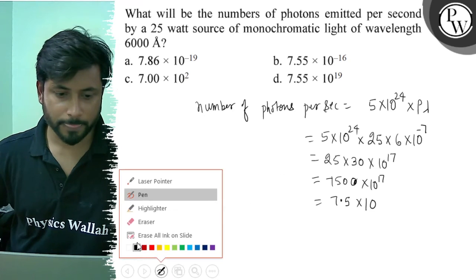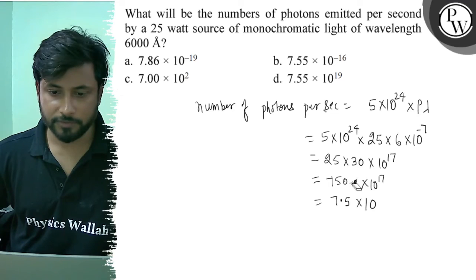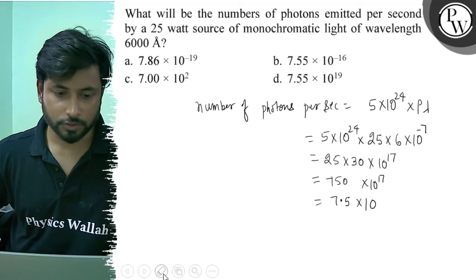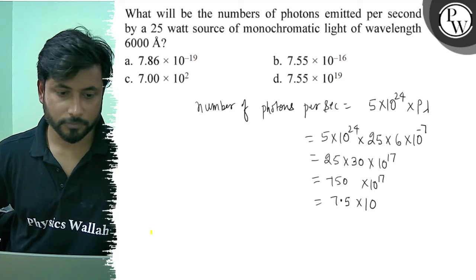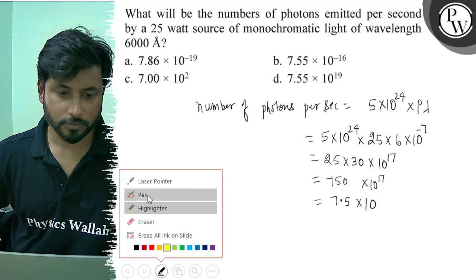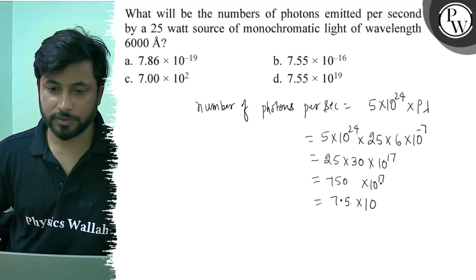It will be 750. So this will be 7.5 into 10 to the power 17.